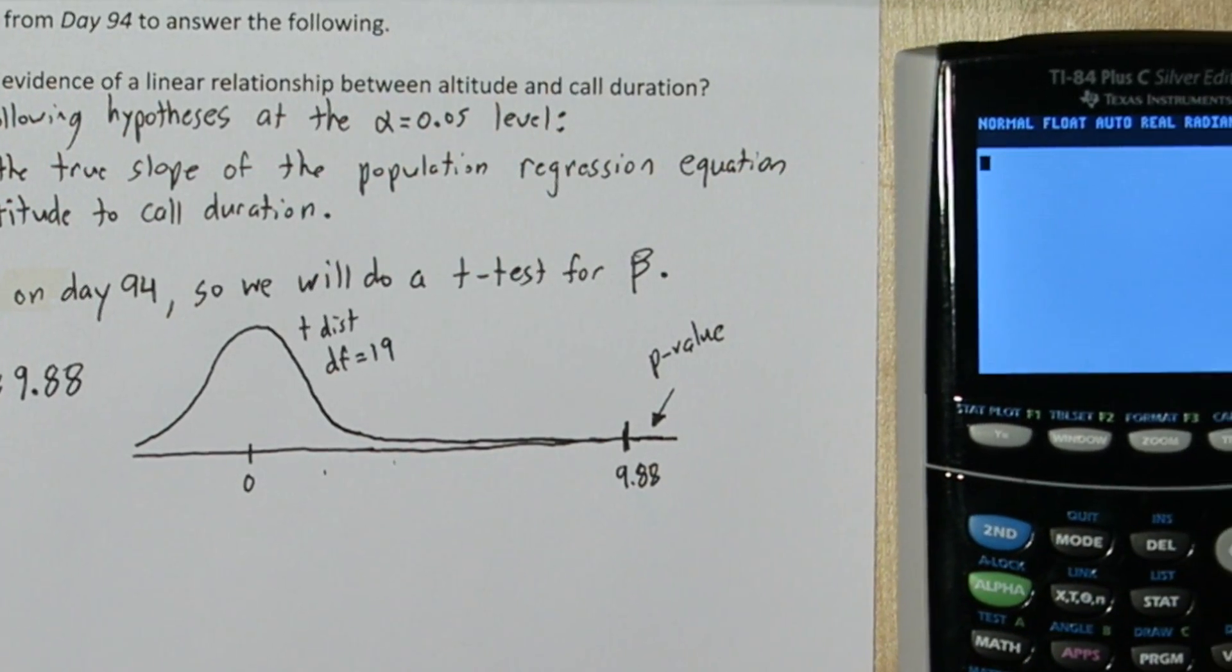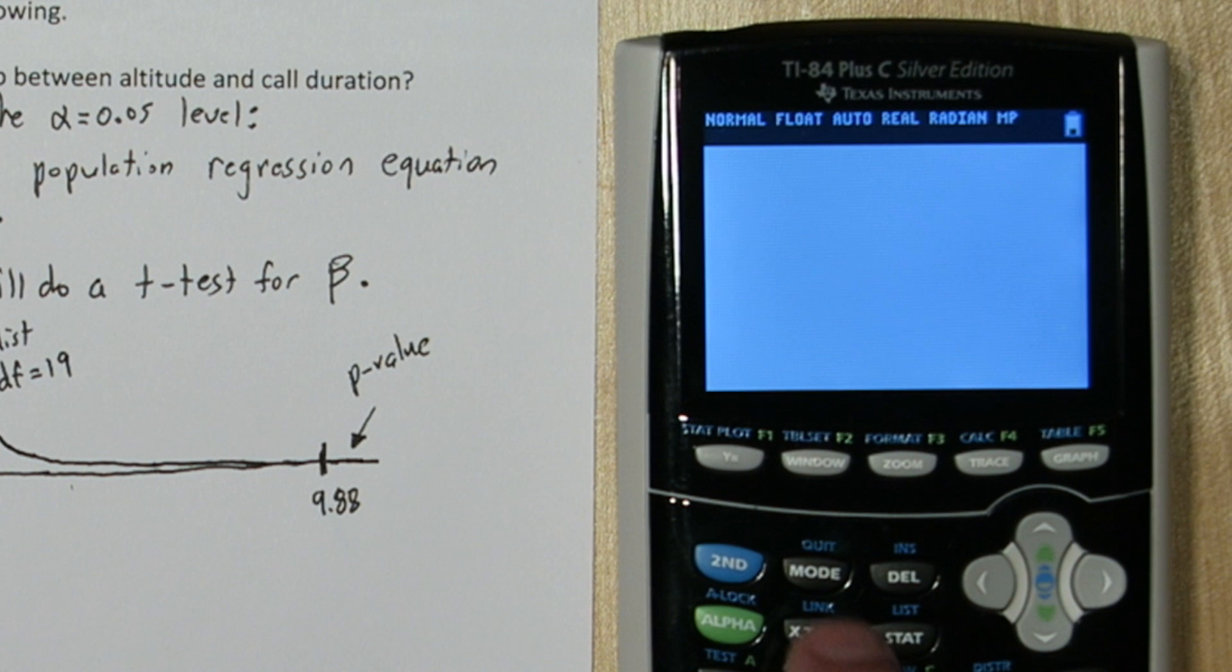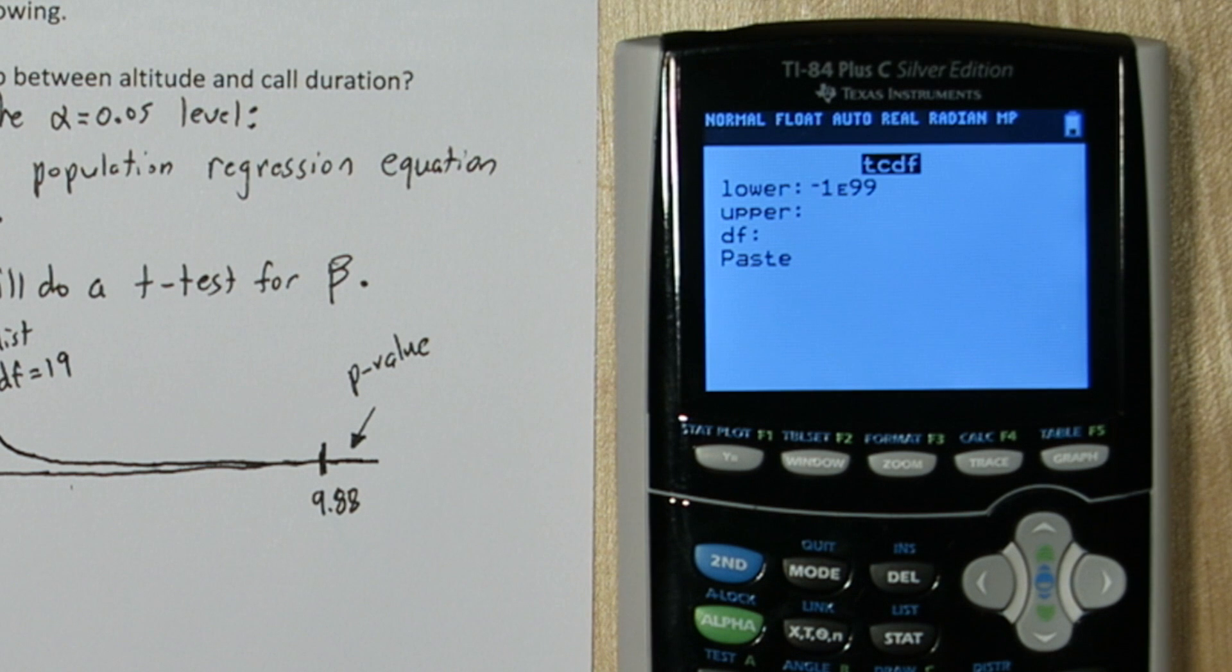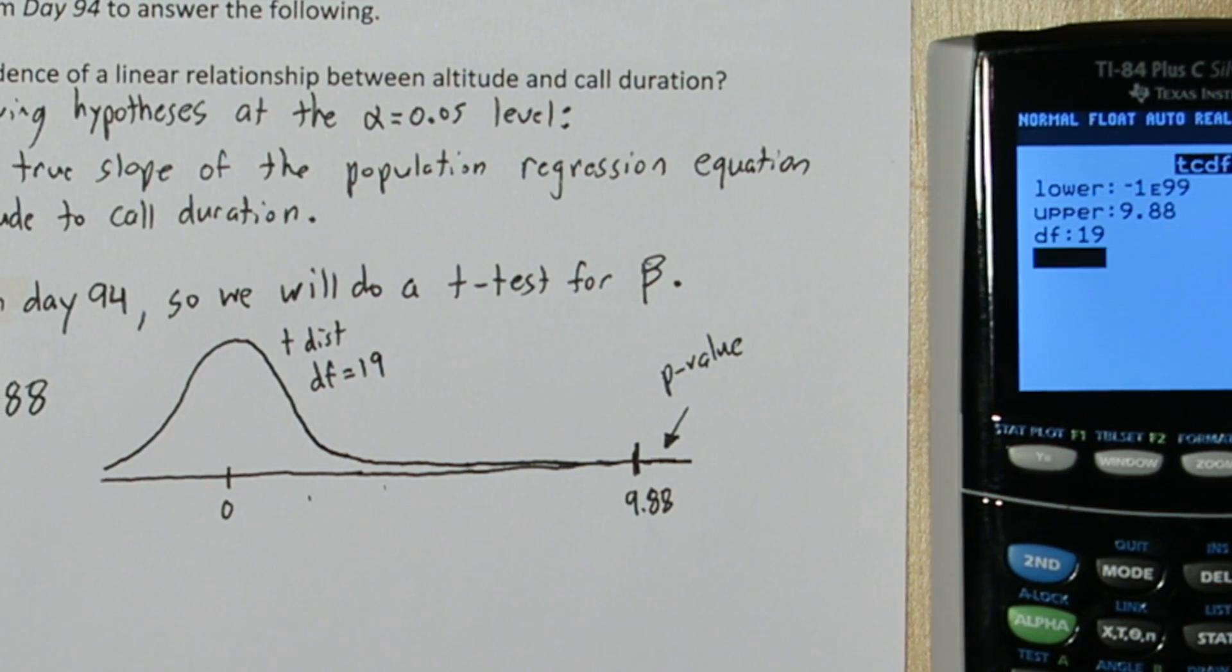To calculate this p-value, we're going to press 2nd vars and go to our distribution menu. Let's go to tcdf. Our lower limit, we're going to keep it negative infinity. Our upper limit is 9.88. And we're going to put 19 degrees of freedom.